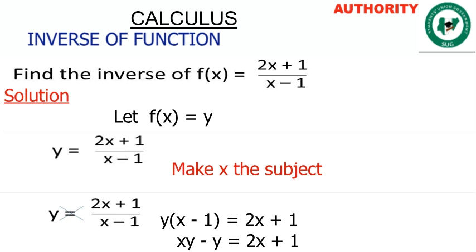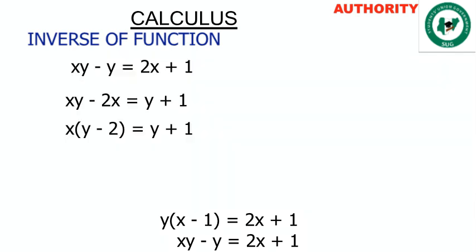So we have xy minus y equals 2x plus 1. Now let's collect like terms, the ones having x let them be on one side and the rest on the other side.